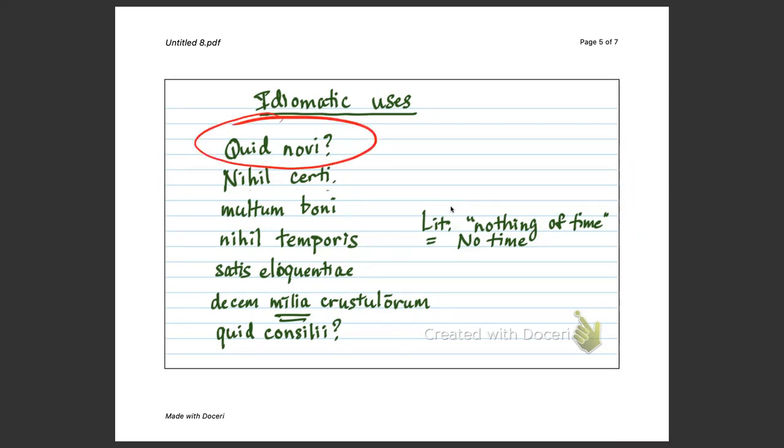Quid novi, literally, what of new, but what's new, or what's up? You can just ask this as a sentence when you run into someone. Hey, quid novi, what's new, what's up? Nihil certi, literally, nothing of certain, or idiomatically, nothing certain.